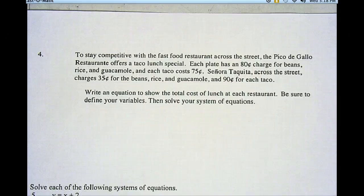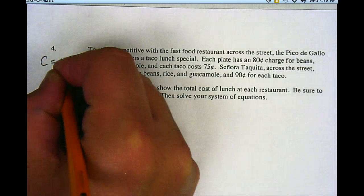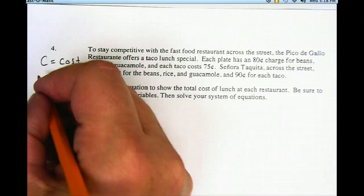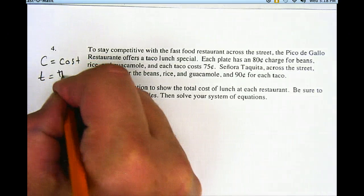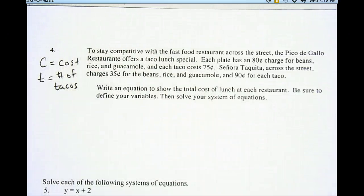Be sure to define your variables, then solve your system of equations. So my two variables, I'm going to have C is going to be cost, and I'm going to let T be the number of tacos. Those are the two variables.